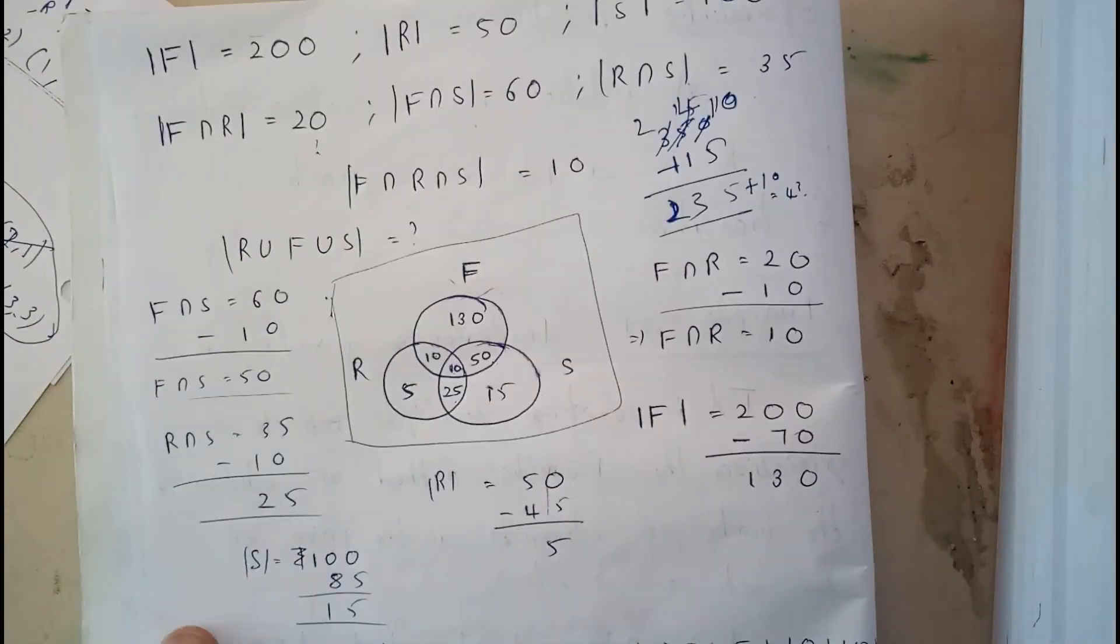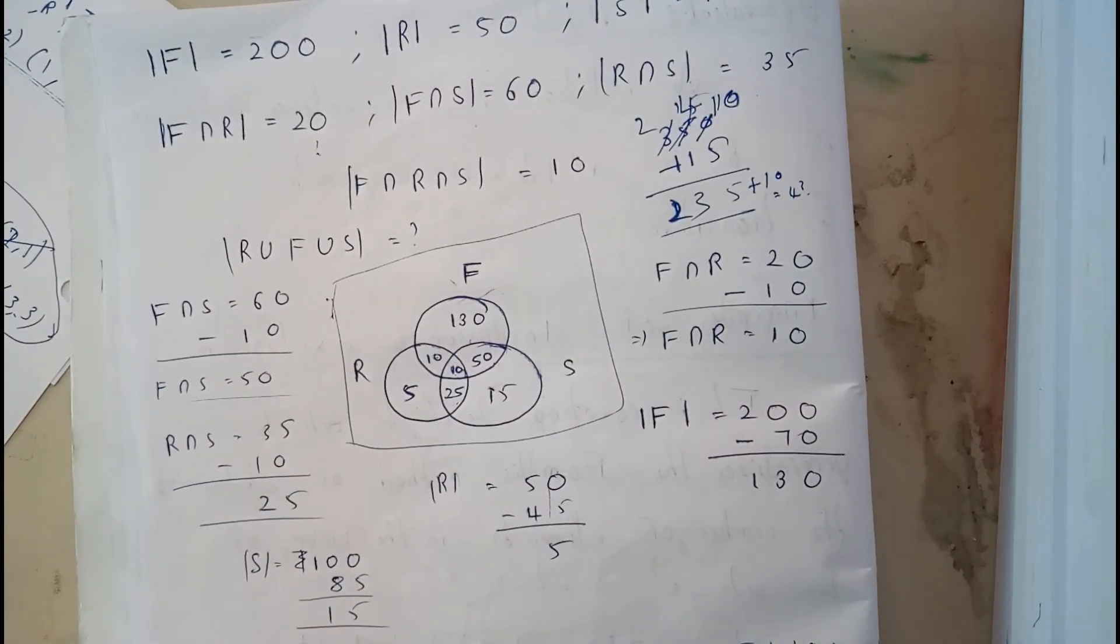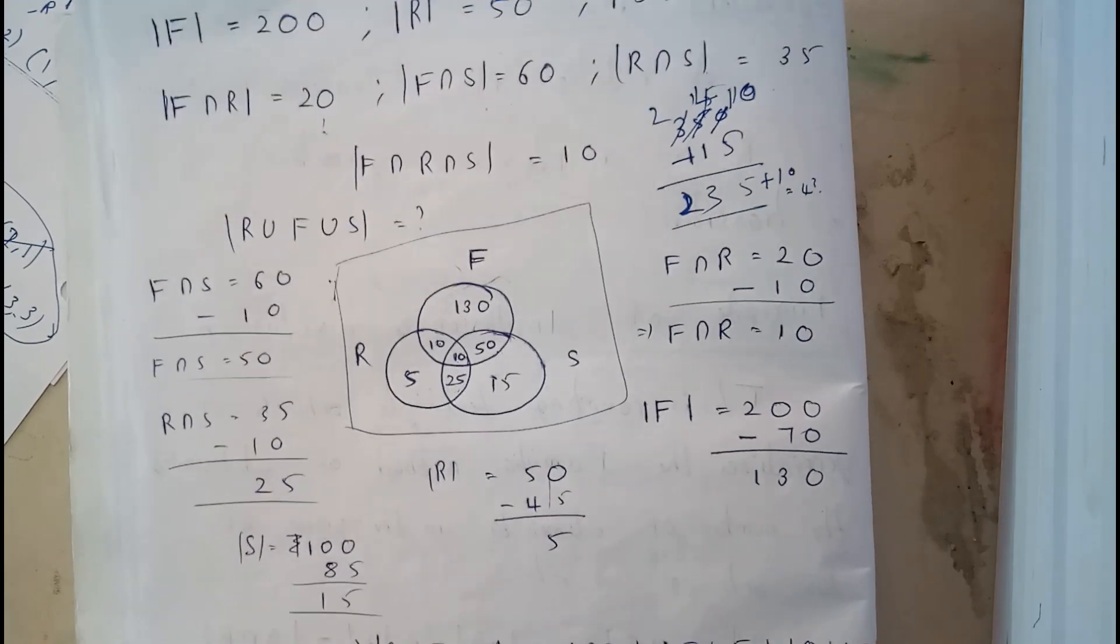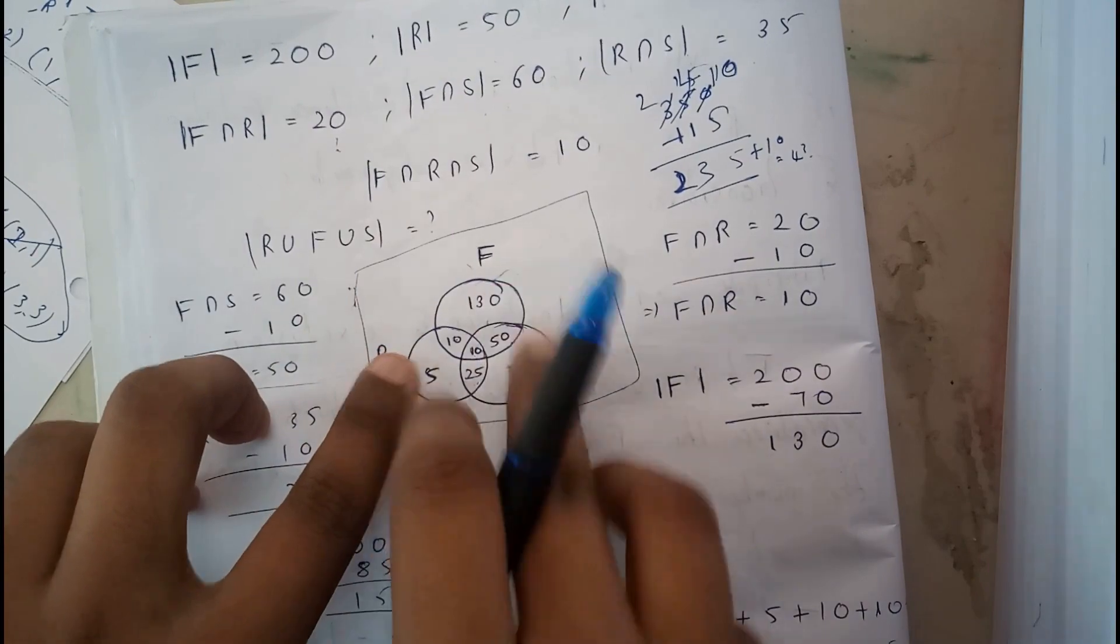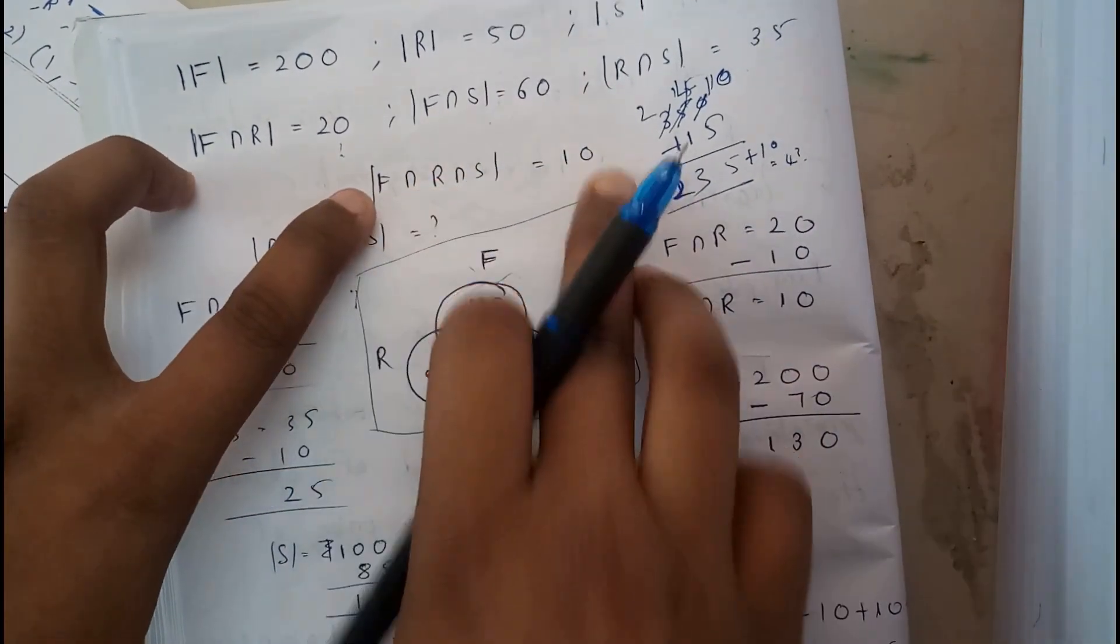If you are good at applying the formulas, that's the best way to find these kind of problems. If you want to apply the Venn diagram, go to the first chapter video and you can learn it from there. I'll be revising once again here. Once you draw the Venn diagram of three circles, just come from the bottom. Three intersection is 10.